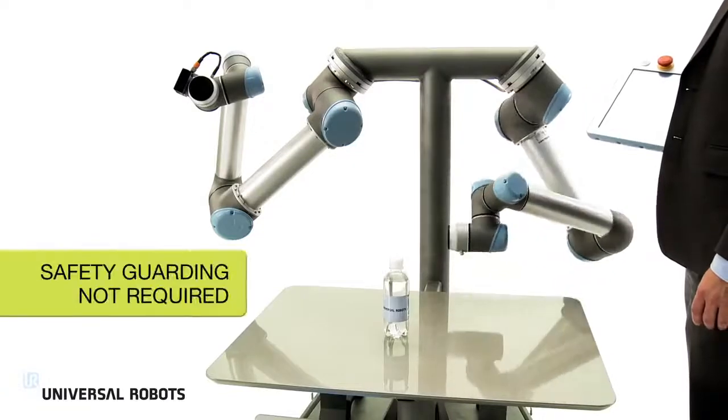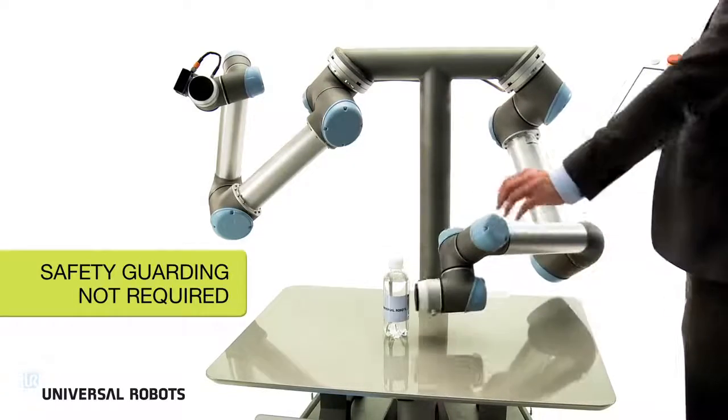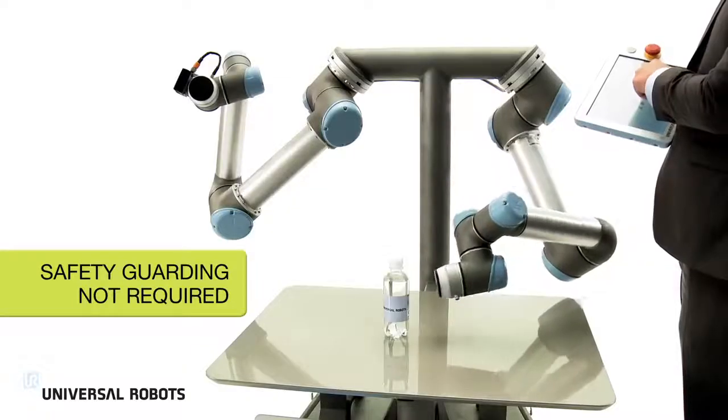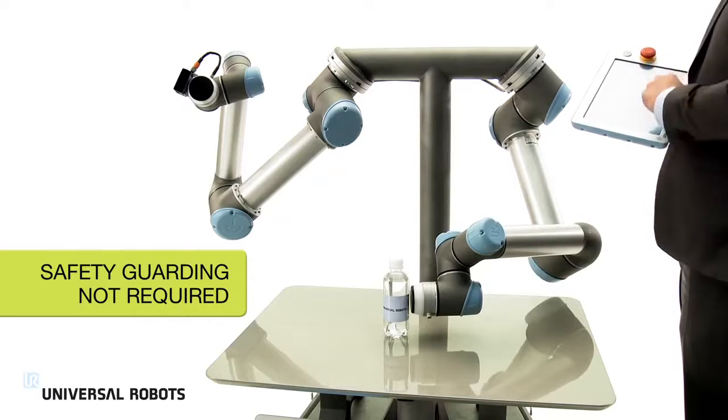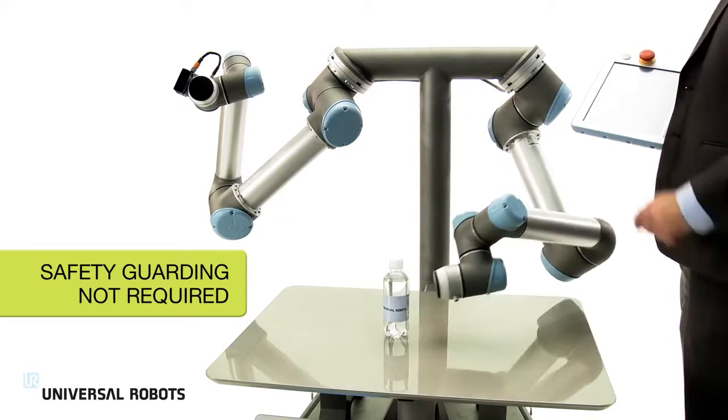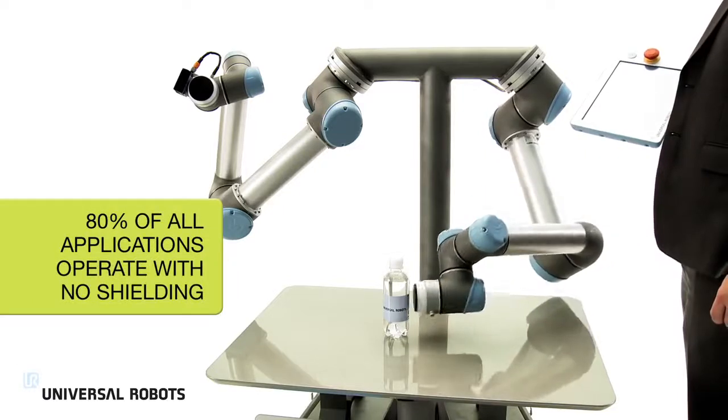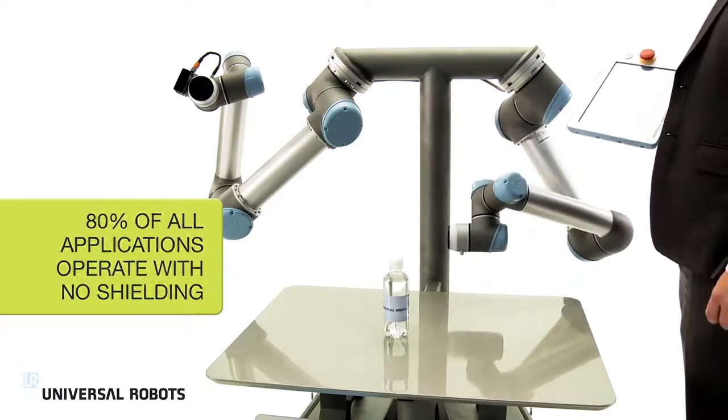Employees can work right alongside the robot. If a person comes into contact with the robot arm, it automatically stops operating, ensuring worker safety. This enables you to integrate the robot right into your production with no need for safety guarding. Eighty percent of current Universal Robots applications operate with no shielding.